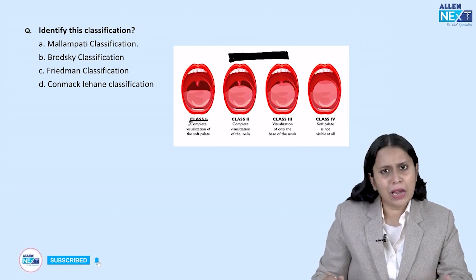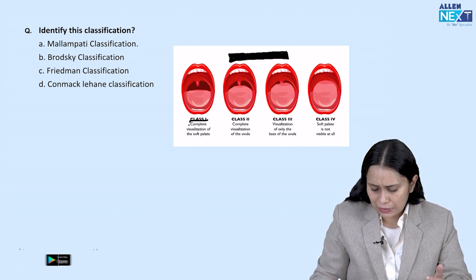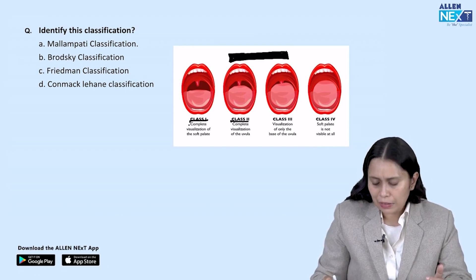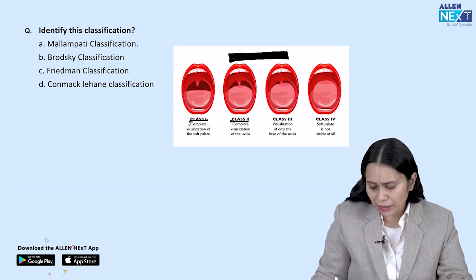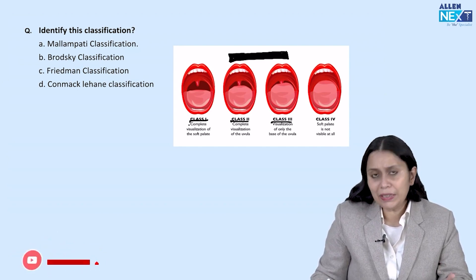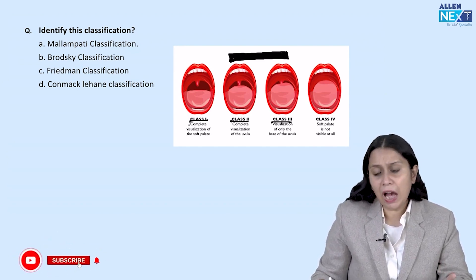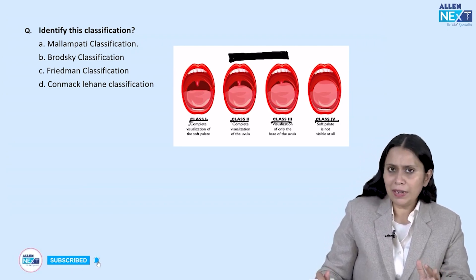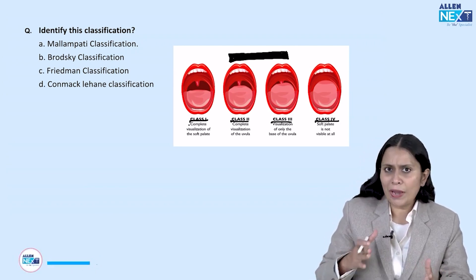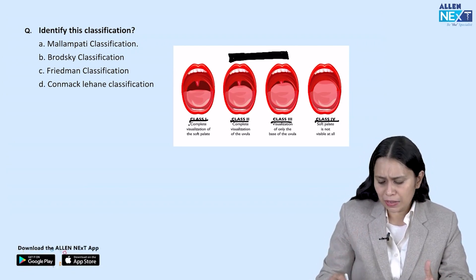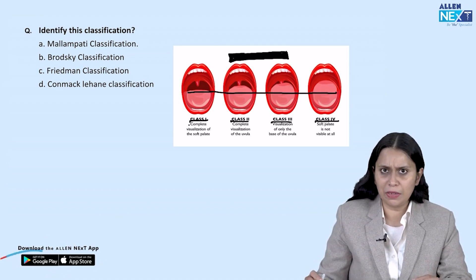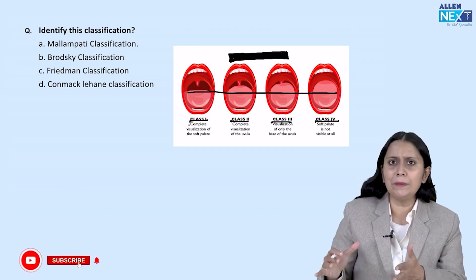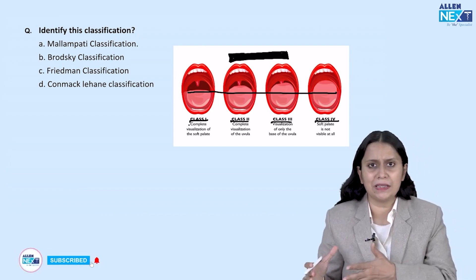If I miss one or two structures, class 2. If I don't see the tip of the uvula, only the base of the uvula, class 3. And if I can only see the hard palate, class 4. Classes 1 and 2 indicate no difficulty because the tongue is small in size, and classes 3 and 4 indicate difficulty because the tongue is bigger. So at first look, this image seems to show the Malampati classification.